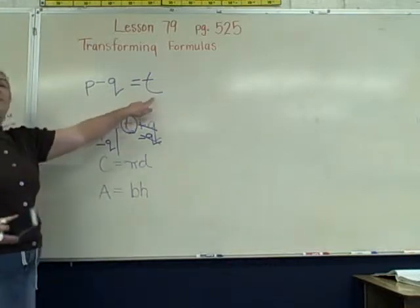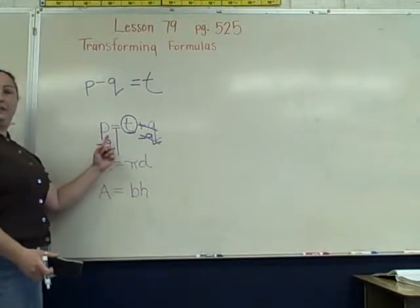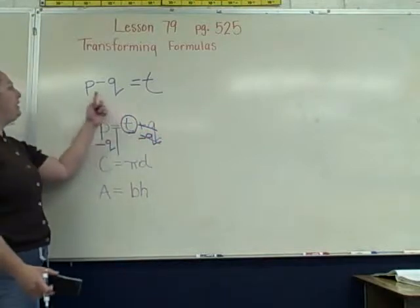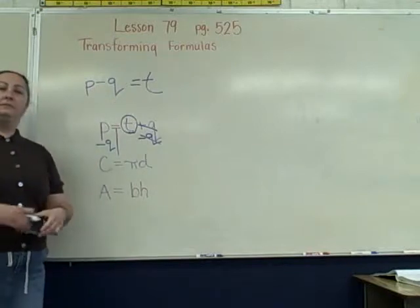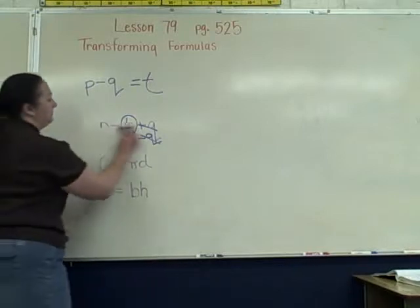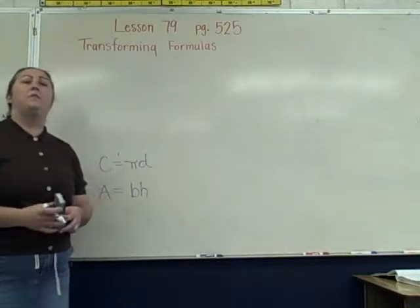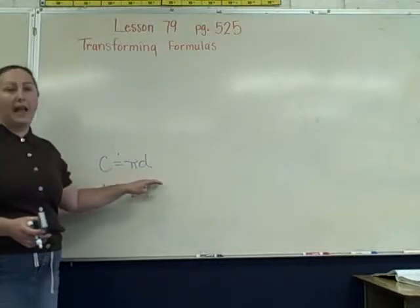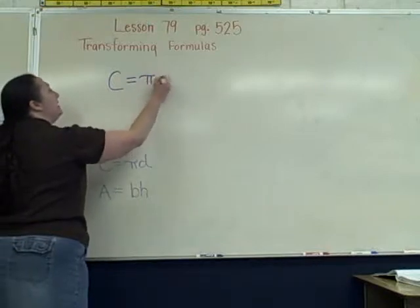T would then equal p minus q, and now I have t by itself. I have transformed the equation from p equals t plus q to the new equation t equals p minus q. The next example starts with the familiar circumference formula: circumference equals pi times diameter, or C equals pi times d.